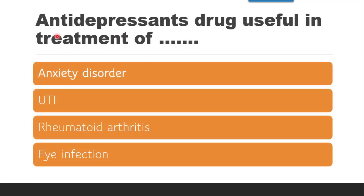Next question: Antidepressant drugs are useful in the treatment of — anxiety disorders, urinary tract infection, rheumatoid arthritis, or eye infection? Since they are antidepressants, they would not be working on urinary tract infections, eye infections, or rheumatoid arthritis. Anxiety is related to the brain. Whatever anxiety disorders or psychic disorders there are, antidepressants will treat.